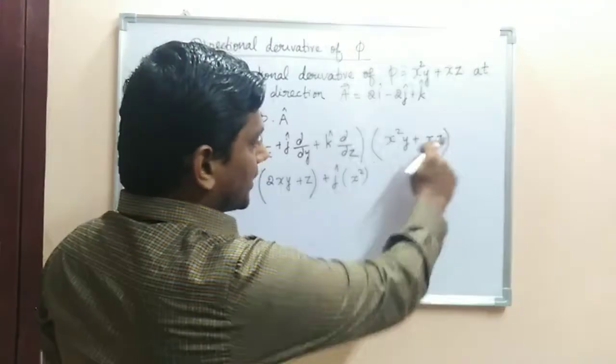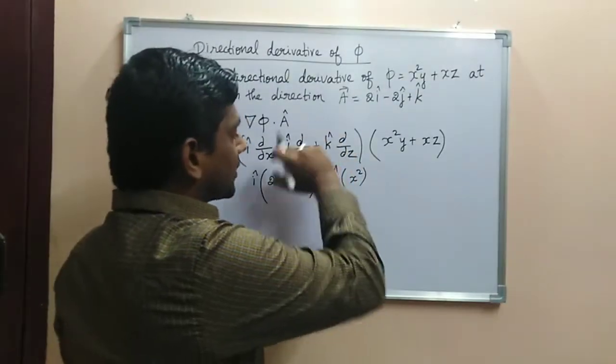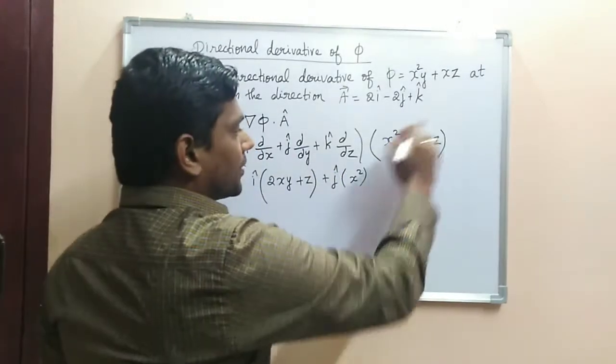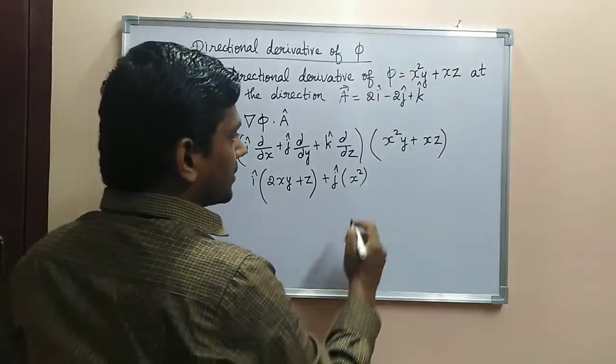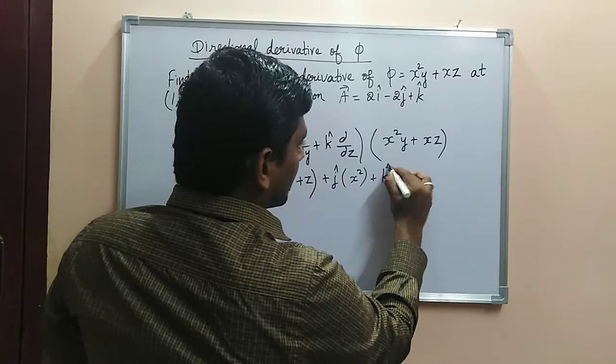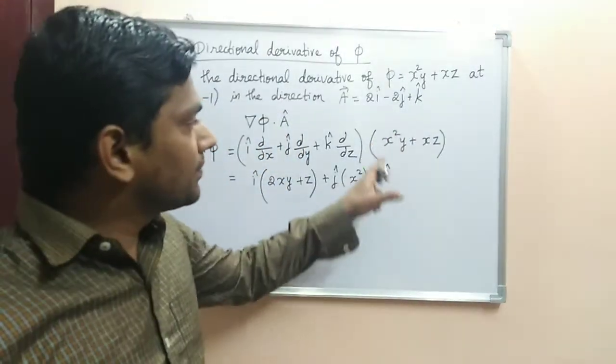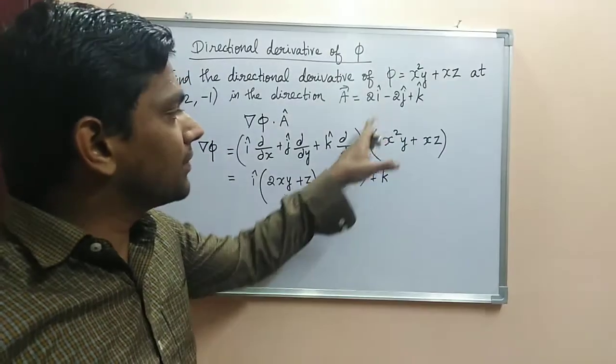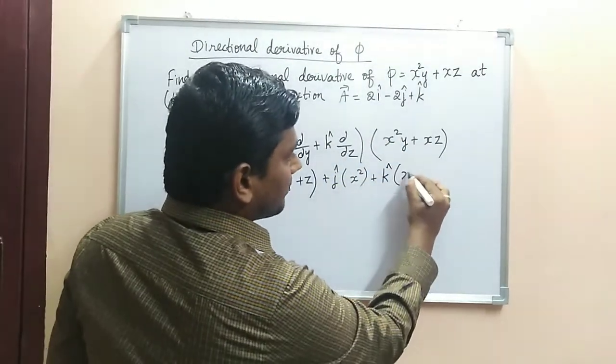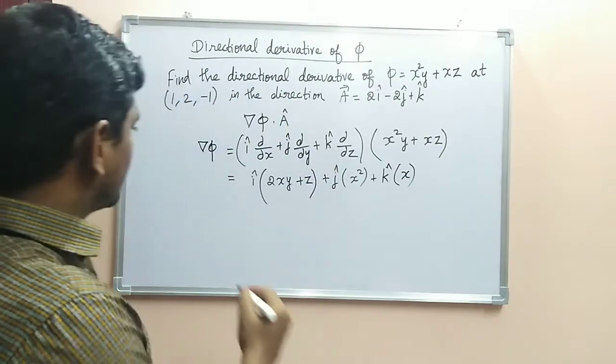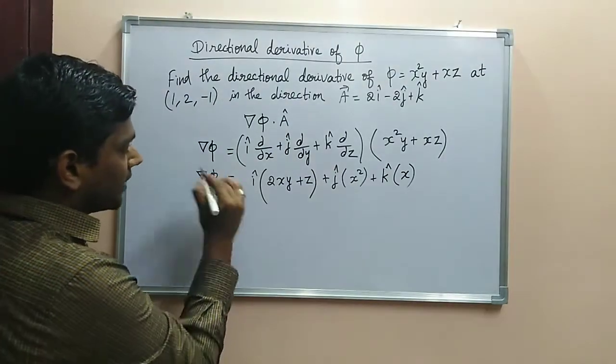Since there is no y term, when you differentiate this with respect to y you are getting 0 here. Then k cap into ∂/∂z. So here also there is no z term, so this will become 0, and here you will get x. So this is ∇Φ in this case.